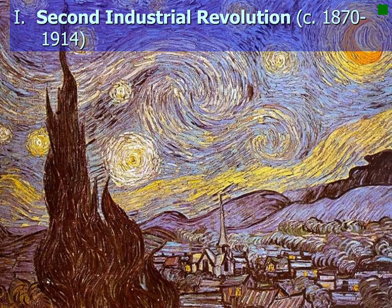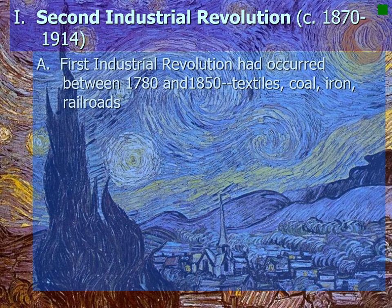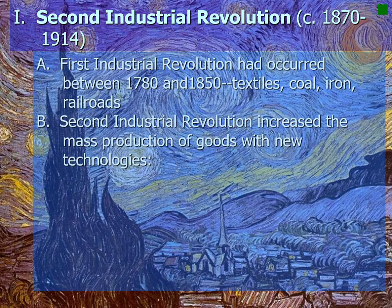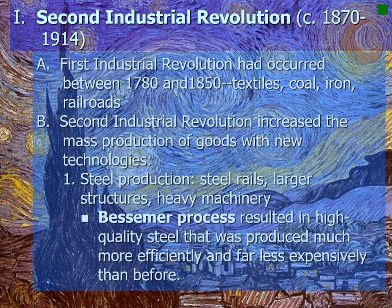The Second Industrial Revolution took place between 1870 and 1914. The first Industrial Revolution, covered in Unit 7, had occurred between 1780 and 1850 and involved mostly textiles, coal, iron, and railroads. The Second Industrial Revolution increased the mass production of goods with new technologies such as steel production. Steel rails were created, larger structures became possible, and better heavy machinery was developed. The Bessemer process resulted in high quality steel produced much more efficiently and far less expensively than before.